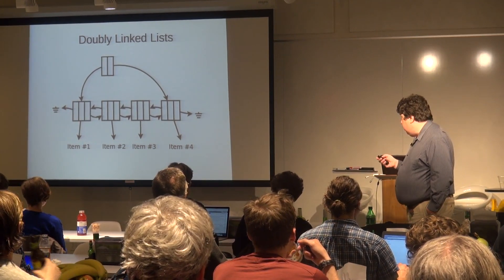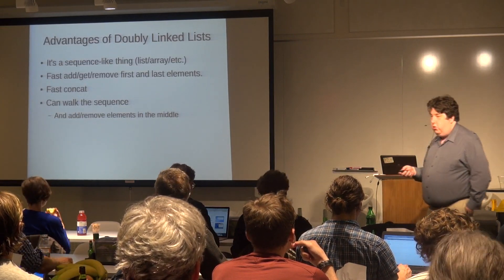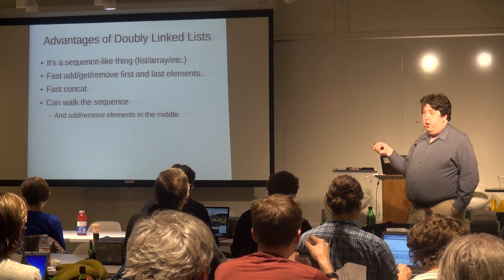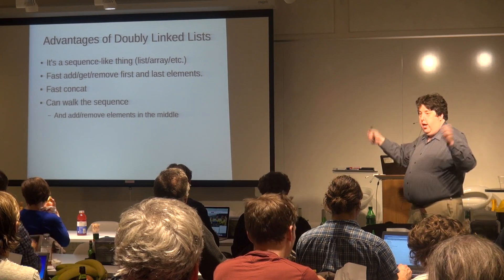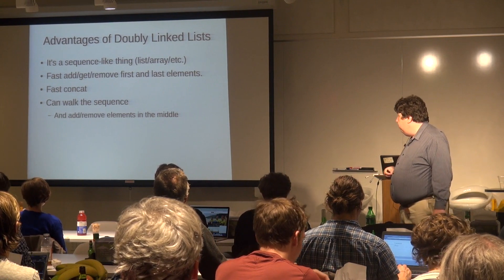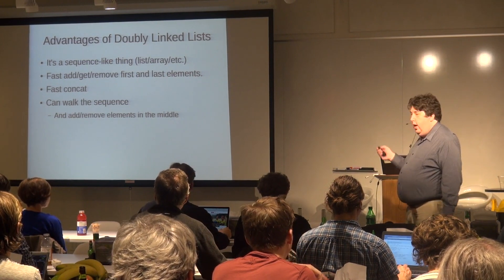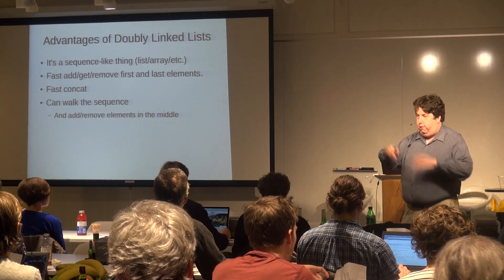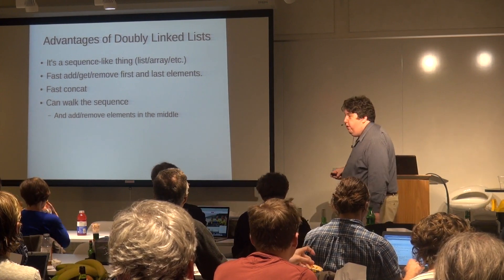This is a very useful data structure seen in many programming languages. It gives us capabilities most other data structures don't have. It's very fast to get, remove, or add elements to either end — you just allocate an element and flop a couple of pointers around. It's very fast to concatenate two doubly-linked lists together, and you can walk the whole sequence and modify stuff in the middle — add stuff, remove stuff — all very, very fast.